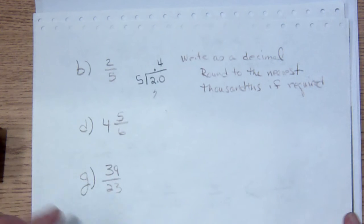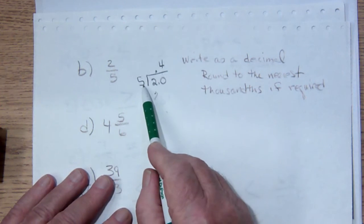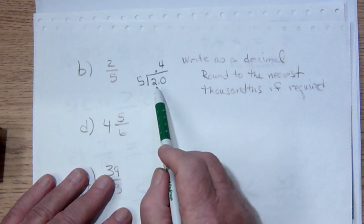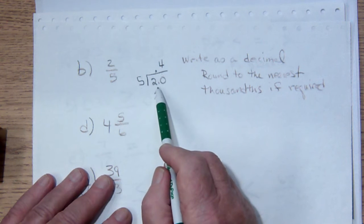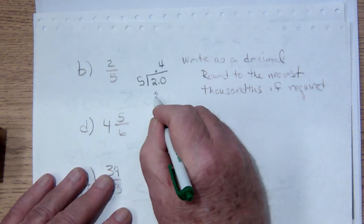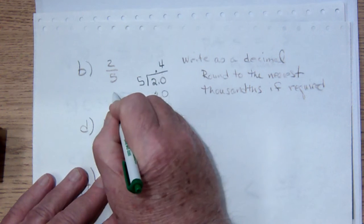Here, we will be taking the 5 denominator, dividing it into 2.0. The decimal goes immediately above where it was down here, because we're taking a whole number into a decimal number. 5 goes into 2 4 times. And so our answer is going to be .4.